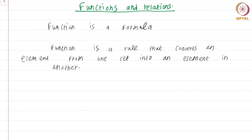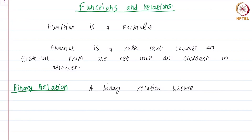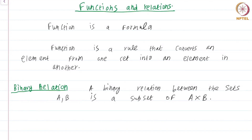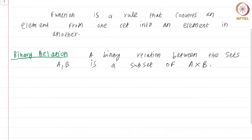To do that, first let us take a more general concept: that of a relation, more precisely the notion of a binary relation. A binary relation between the sets A and B is a subset of A cross B. A cross B is by definition the collection of all ordered pairs (a, b) such that a comes from the set A and b comes from the set B.